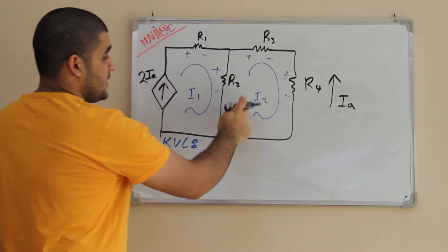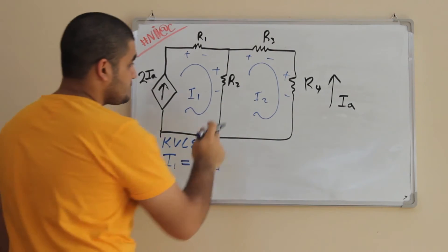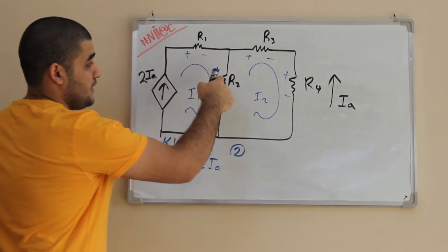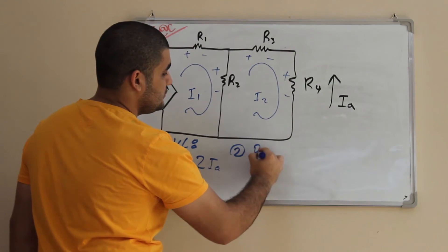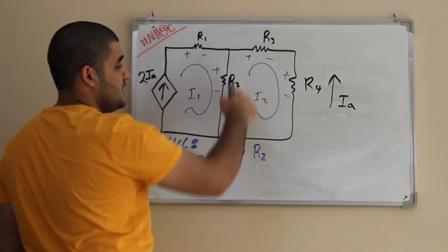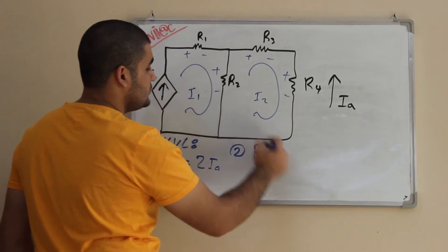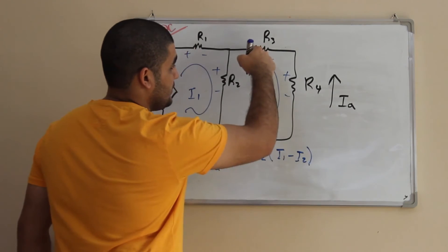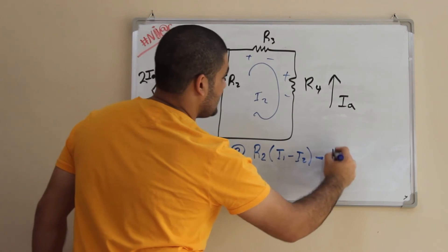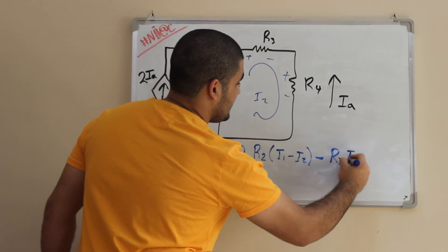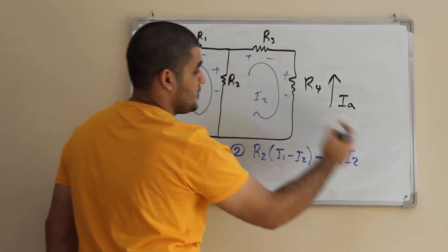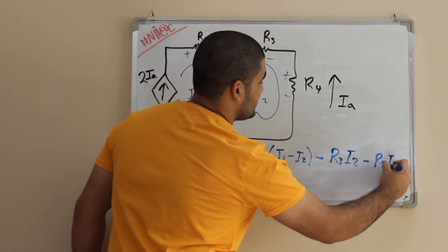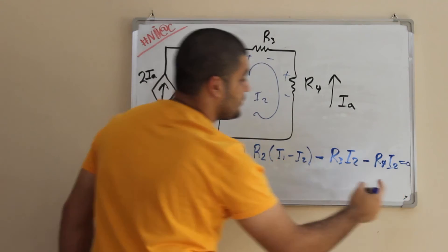Now I go to the second part. I write my second equation. R2 with a sign, so R2 times I1 minus I2. On here, minus R3 multiplying to I2, minus R4 multiplying to I2. All of that is equal to 0.